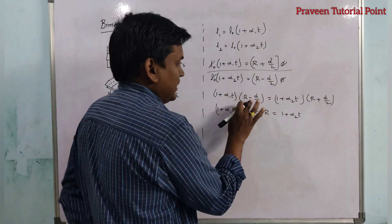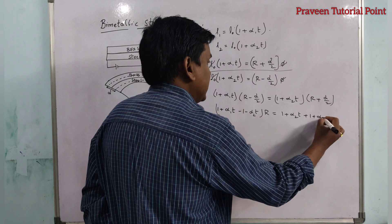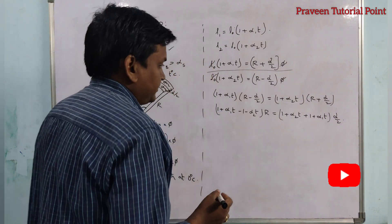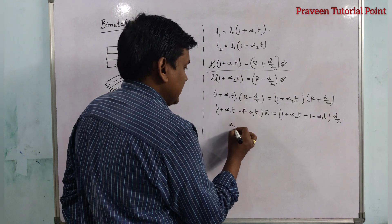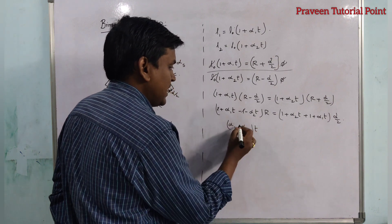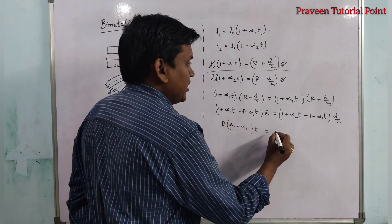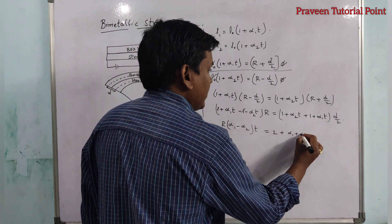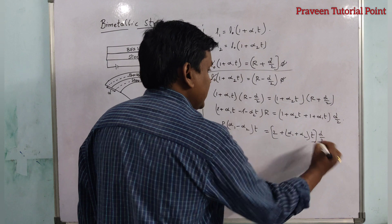Rearranging: (1 + alpha1 t) minus (1 + alpha2 t), all into r, equals (1 + alpha2 t) plus (1 + alpha1 t), all into d/2. The plus 1 and minus 1 cancel on the left, giving (alpha1 minus alpha2) t into r. On the right, 1 plus 1 gives 2, plus (alpha1 plus alpha2) t, all into d/2.